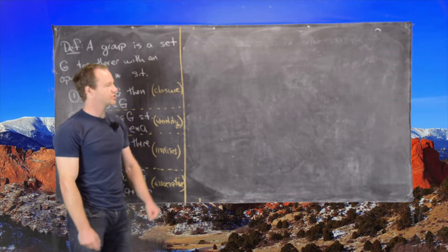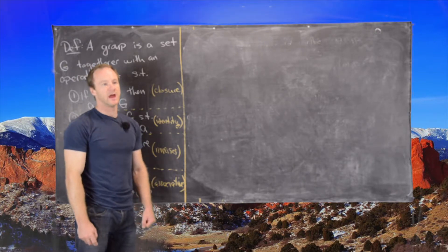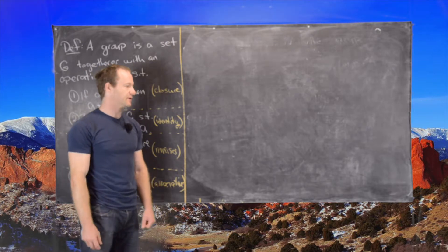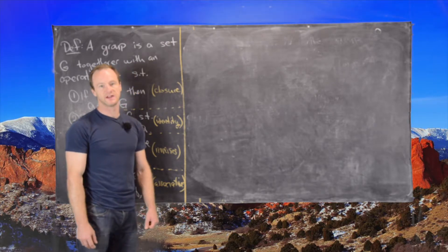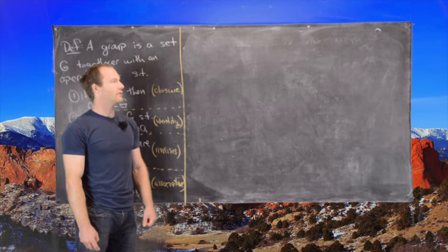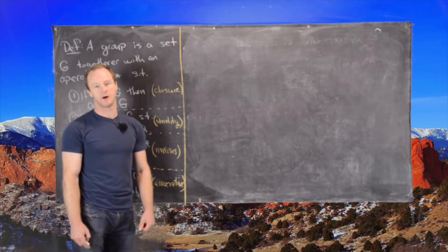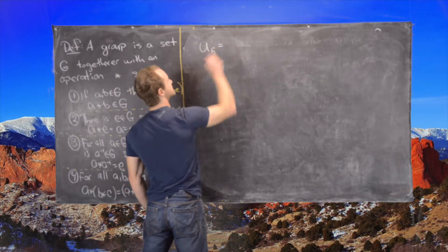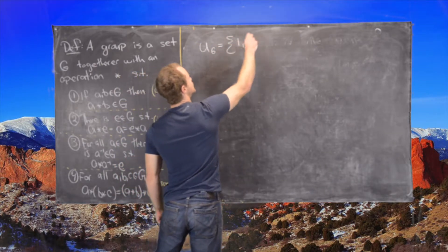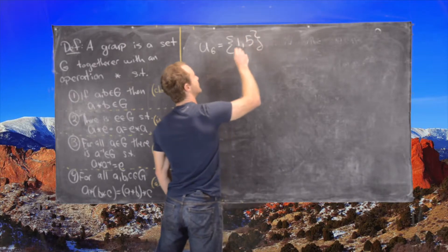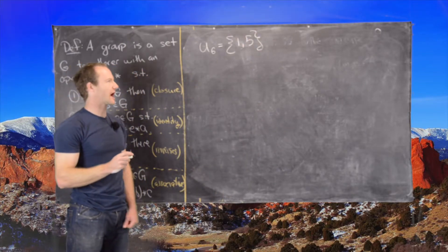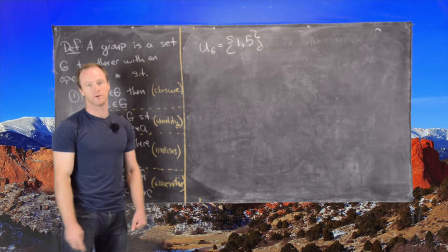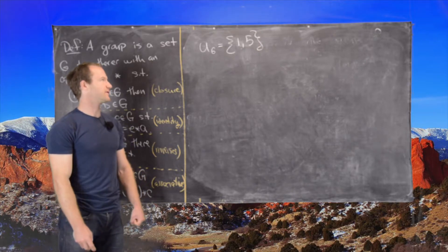We introduced Un, the group of units modulo n, and then we proved that it was a group. It was a bit of a sketch of a proof, but you can fill in the details pretty easily. Now we want to look at some multiplication tables mod n. Let's look first at U6, which equals {1, 5}. Notice I haven't written bracket 1 and bracket 5. We're using the understanding that these are in fact equivalence classes, just simplifying notation.